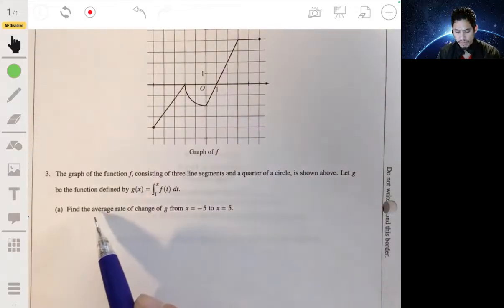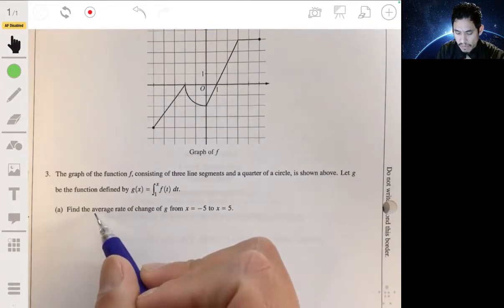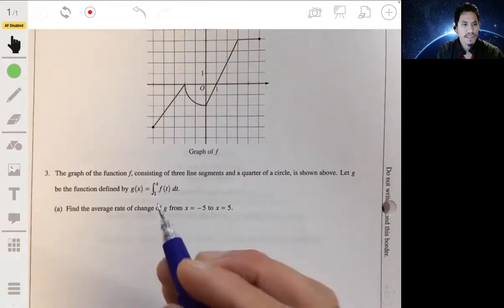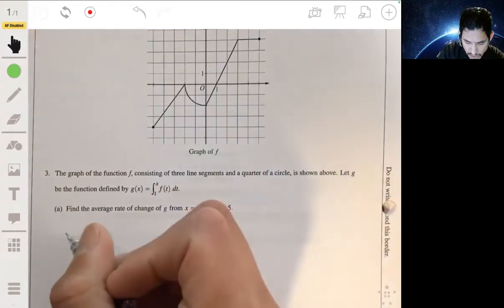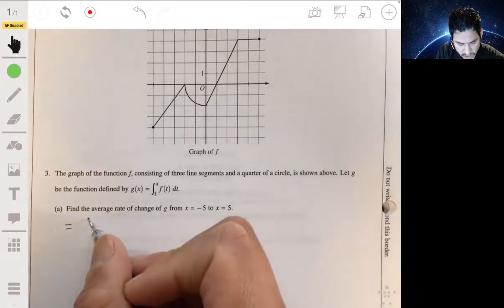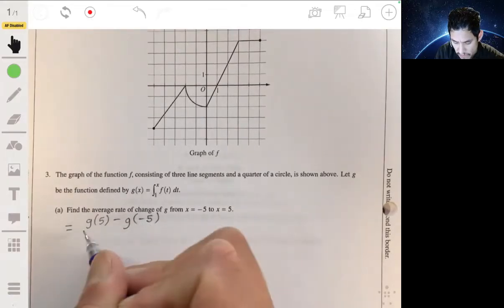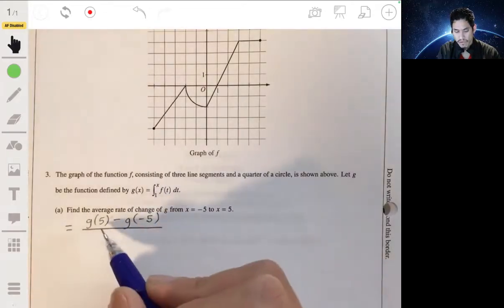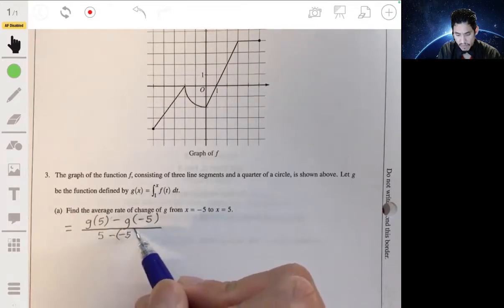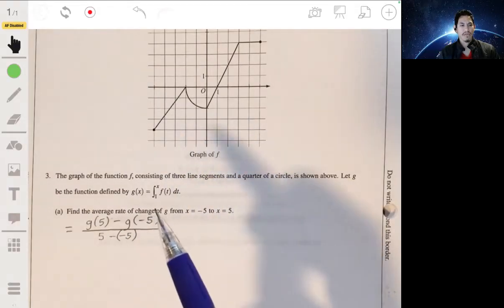Okay, so remember just the basic definition and the basic concept between rate of change and how it relates to slope. When we're talking about average rate of change on an interval, this is simply going to be equal to the value of G at one endpoint. So we can say G of 5 minus the value of G at the other endpoint over that interval. So over 5 to negative 5, so 5 minus negative 5 would be the denominator. So it's basically like your slope formula, F of B minus F of A over B minus A.